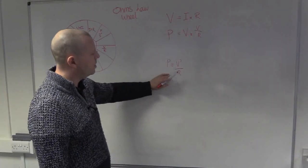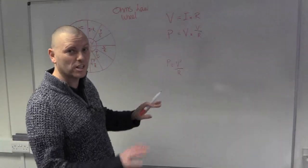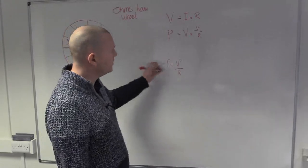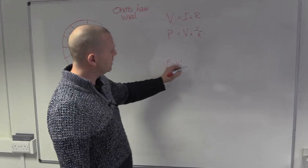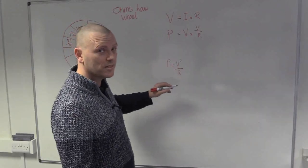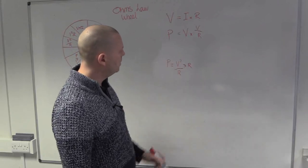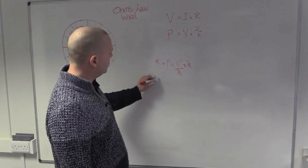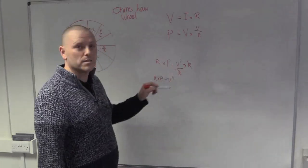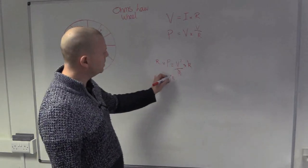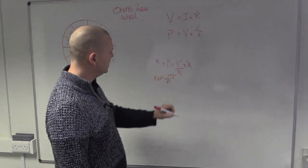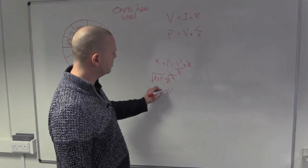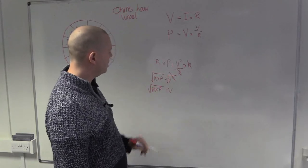Starting with P = V²/R, we need to transpose for V. Whenever something is downstairs, get it upstairs first — it makes transposition easier. Multiply both sides by R to move it upstairs: P × R = V². Now to isolate V we take the square root of both sides, giving us V = √(R × P) — voltage equals the square root of R times P.